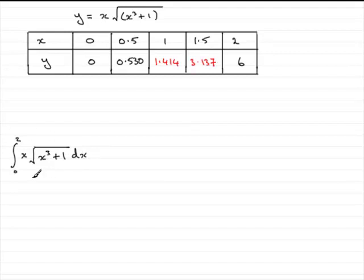Now whenever you do an integral, what you're essentially doing is finding out the area under a graph bounded by your limits, in this case 0 to 2, of your graph y equals, in this case, x root x cubed plus 1.